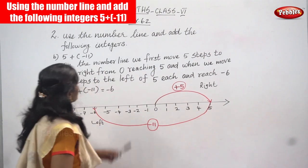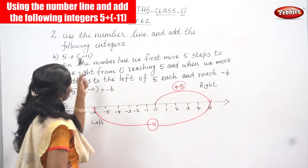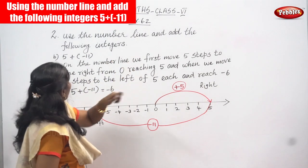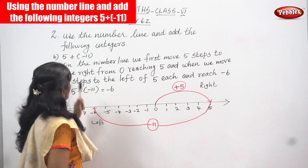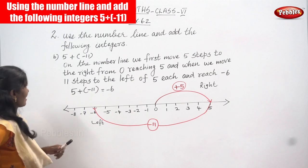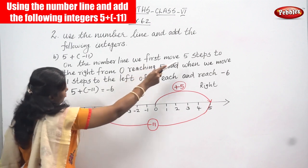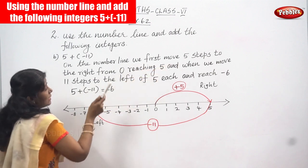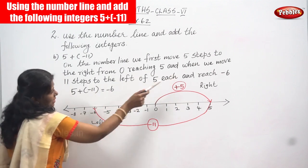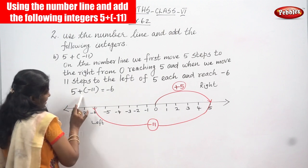Welcome to Pebbles. In today's class we are going to see Maths Class 6 Exercise 6.2, second question: use the number line and add the following integers. The question is 5 + (-11). On the number line, we first move five steps to the right from zero, reaching 5, and when we move 11 steps to the left of 5, we reach minus 6.